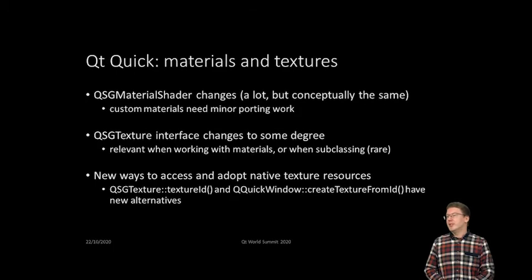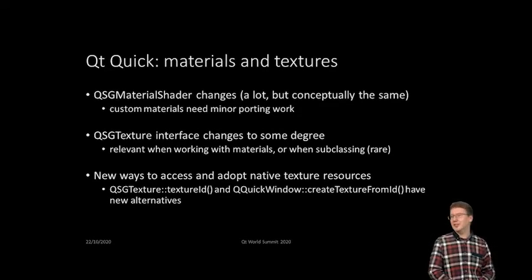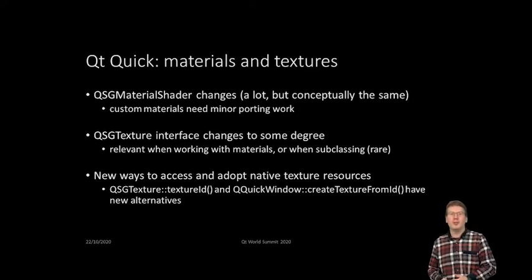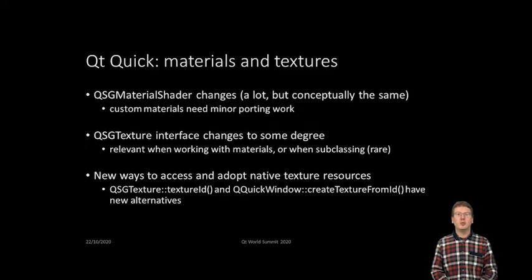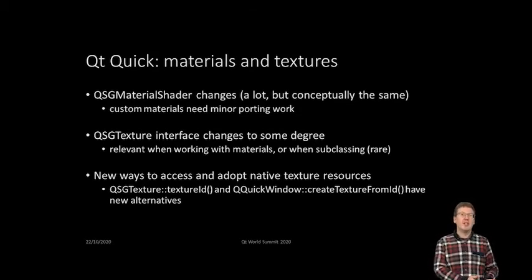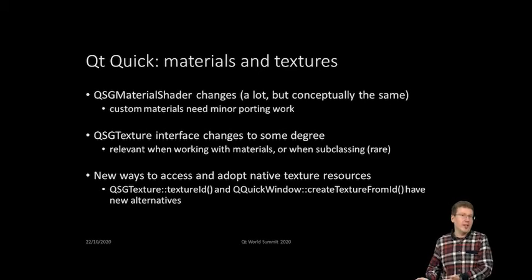The most important thing is that it will now purely describe data. Previously, with an OpenGL context current on the thread, we called a function called updateState — you could reimplement that and do what you want, call glUniform or change any state. That's going to go away since it's not compatible with the new cross-graphics API concepts. MaterialShader really just has to describe the state changes it wants — it has to say which QSGTexture it wants bound at which binding point in the shaders — but it will not do the actual graphics API calls itself; that's up to the engine like Qt Quick.